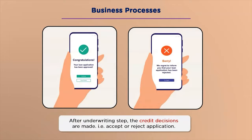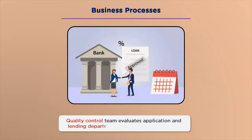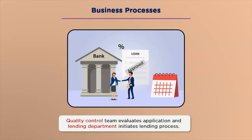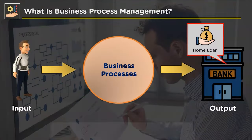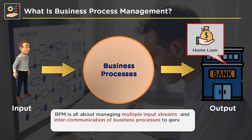In the next phase, credit decisions are made. If the customer fulfills all required criteria, the application is approved; otherwise, it is rejected. In the following phase, quality assurance is achieved. Since lending is a highly regulated business, banks rely heavily on the quality check stage of the loan origination process. The application is routed to the quality assurance team, which compares crucial variables against internal and external standards and regulations. This is the final step before the loan is submitted for funding.